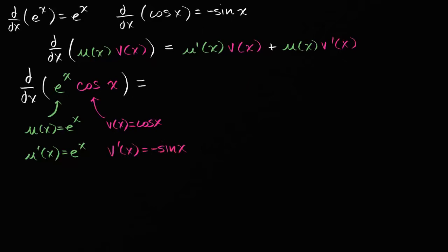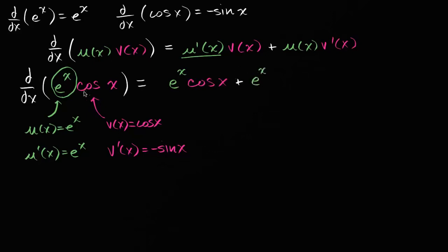So what is this going to be equal to? It's the derivative of the first expression — the derivative of e to the x, which is just e to the x — times the second expression without taking its derivative, so times cosine of x, plus the first expression e to the x times the derivative of the second expression, which is negative sine of x. Note that e to the x is its own derivative — that's what's exciting about that function.